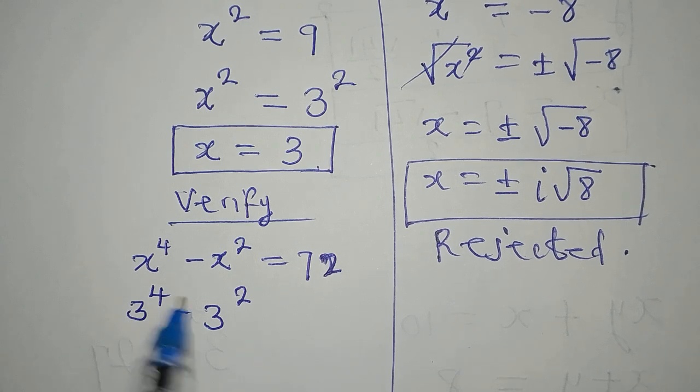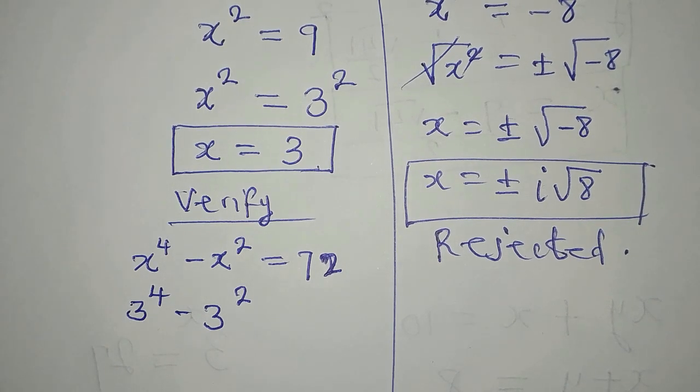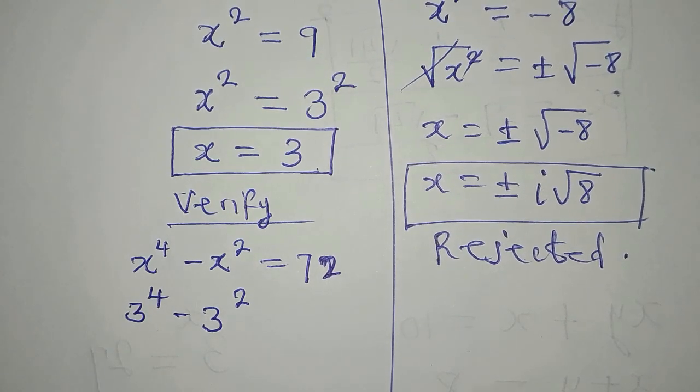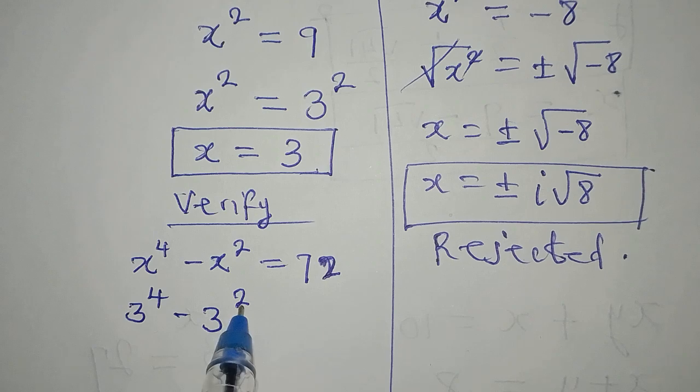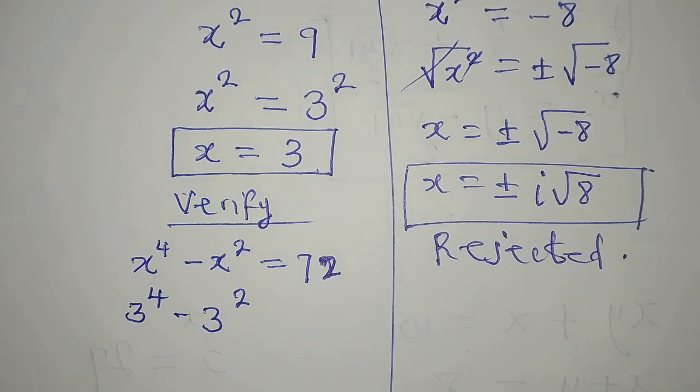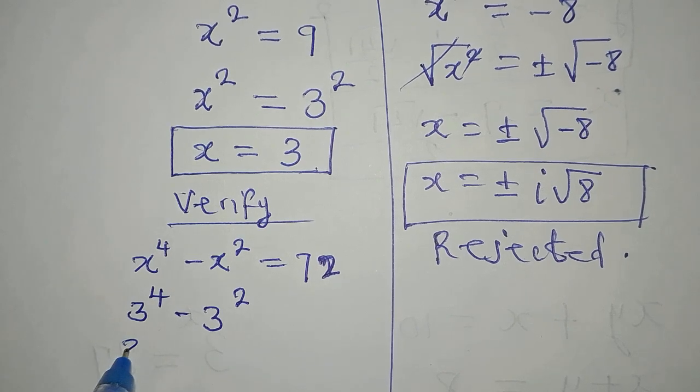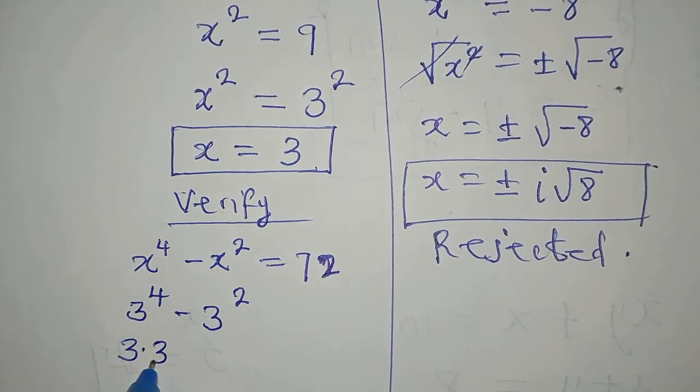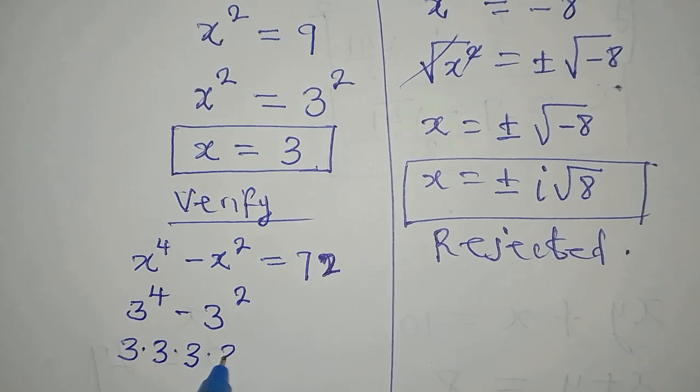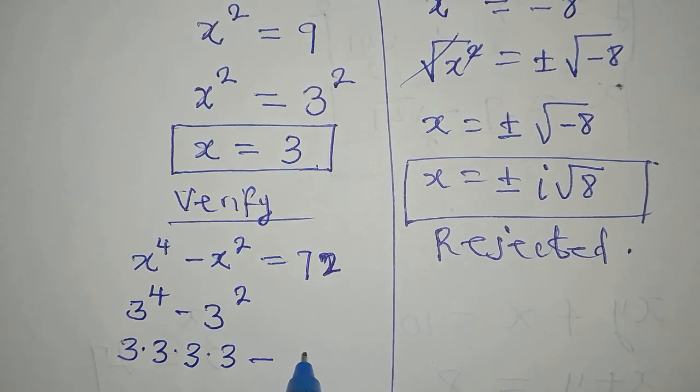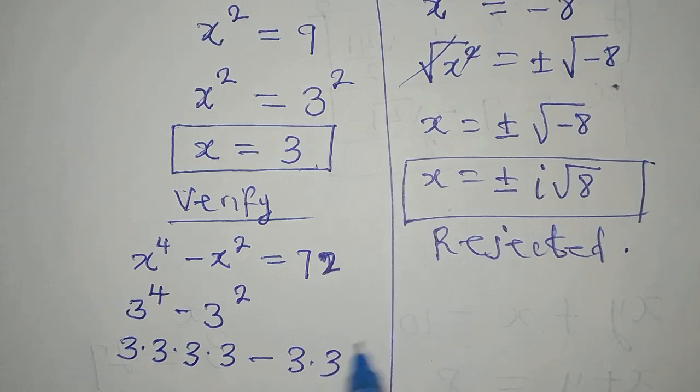3 to the power of 4 is not 12. Some persons will multiply 3 by 4 and then get 12, and 3 times 2 to get 6. But that is wrong. 3 to the power of 4 is 3 times 3 times 3 times 3. Then minus 3 squared is 3 times 3. Right?